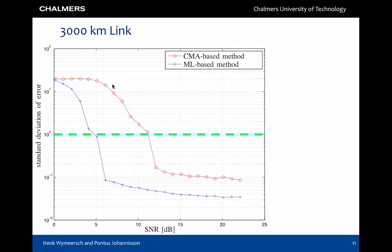For the 3000 kilometer link, similar conclusions can be drawn, allowing the ML-based estimator to operate already at 5 dB, while the CMA-based method requires in excess of 10 dB.